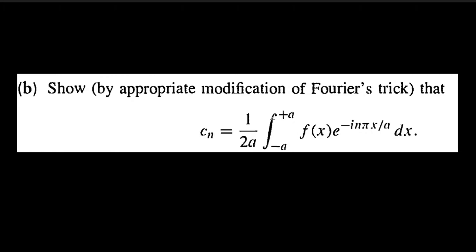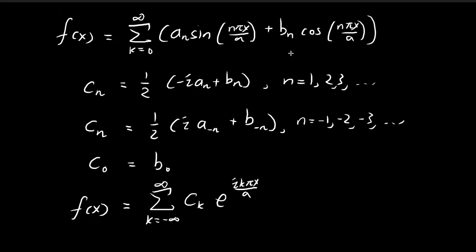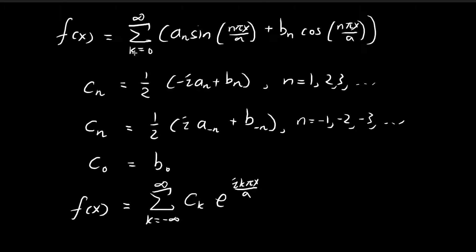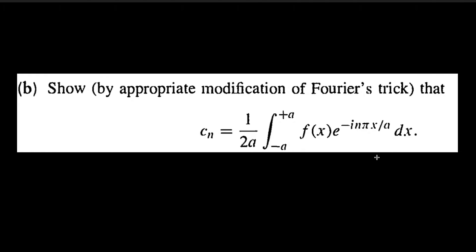In this problem we're going to find cn using this integral. As a recap from the last video, we started with the definition of Fourier series and found that using that expression we could define cn. We found an and bn using Fourier's trick, then used those to define the new constant cn. What this problem tells us is that we don't have to go through the hassle of finding an and bn — we can find cn directly using this integral.